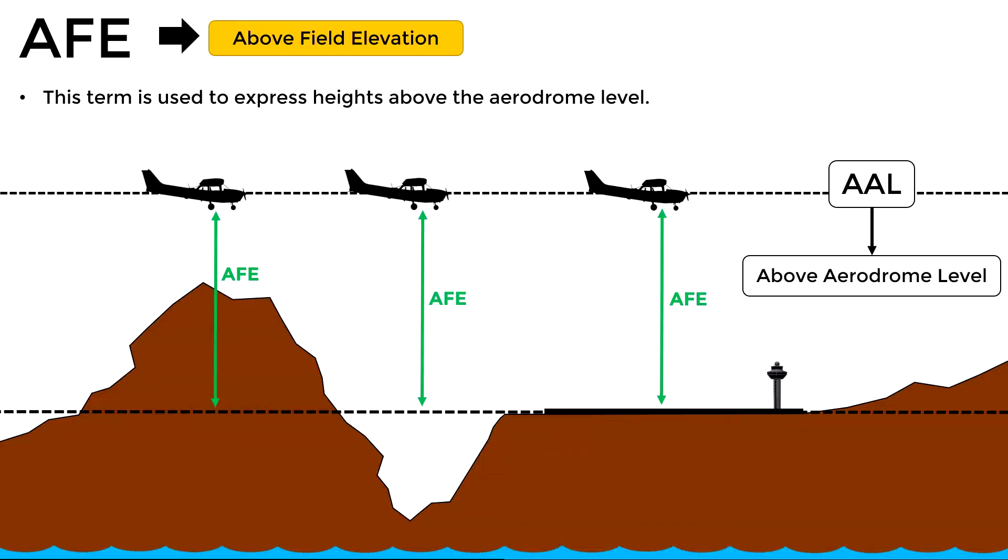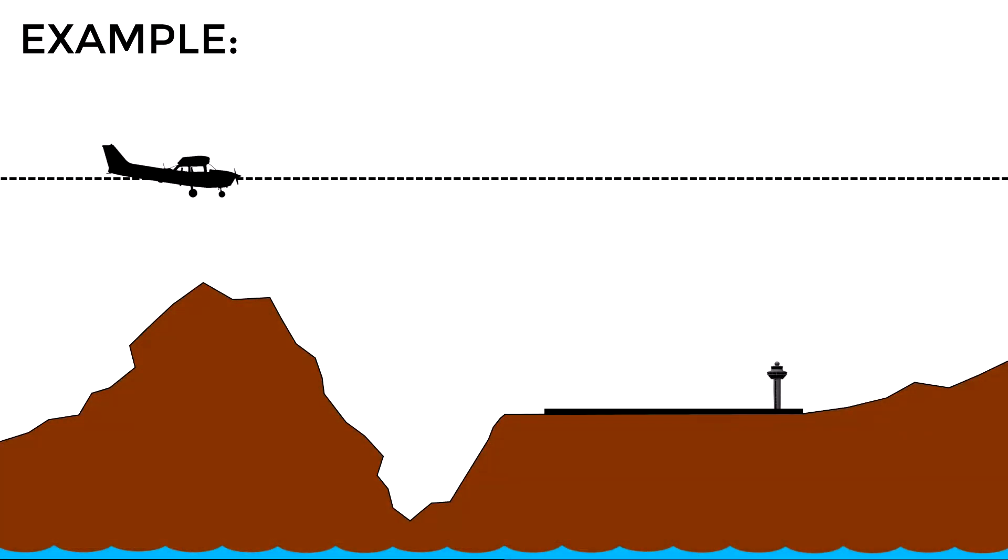Let's see an example where we integrate all the concepts and abbreviations explained so far. Let's say we want to express the vertical position of this aircraft using the different terms. Let's suppose the airport elevation is 2000 feet. Currently the aircraft is passing over this mountain and let's say that its AGL height is 500 feet. However, its AFE height is greater, in this case 1500 feet. And finally, according to this data, the altitude AMSL is 3500 feet.